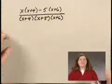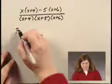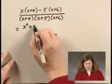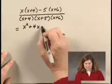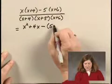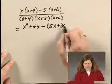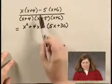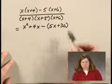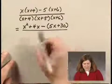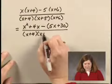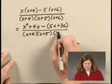Now I can work on simplifying the numerator. I first multiply, and I get x squared plus 4x minus — and I use parentheses here — 5x plus 30. Whenever you're subtracting, be sure to use parentheses or it's easy to forget to change all the signs. And that's all over x plus 4 times x plus 5 times x plus 6.